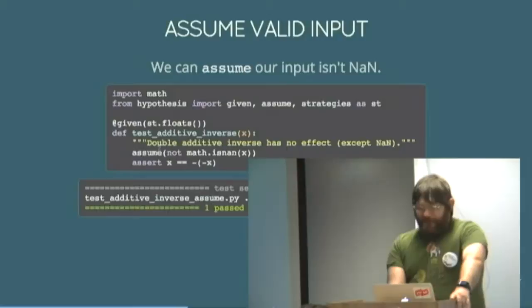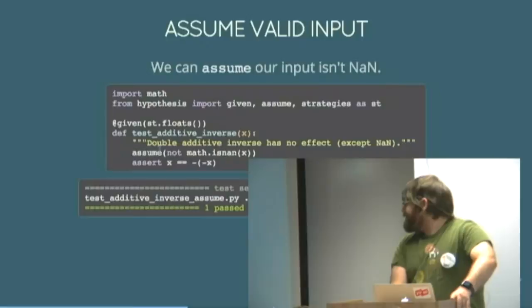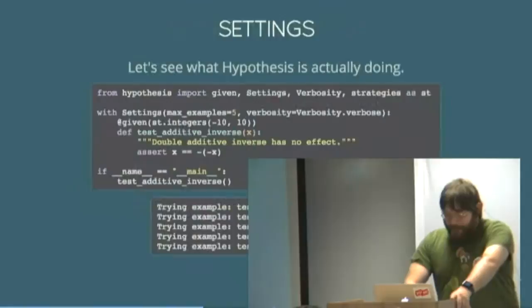But not a number is not a useful thing to have in your code quite often. Usually you don't care about the behavior of your code if it's faced with things that aren't numbers. So you can tell Hypothesis, assuming that my code doesn't include not a number, this property should be valid. So there's that assume function there which throws a magic exception which Hypothesis catches and it just ignores this input data. It says I don't care about this value, please try again with something else.